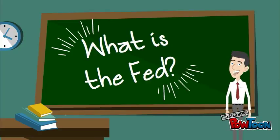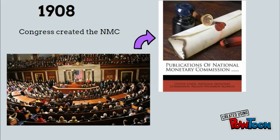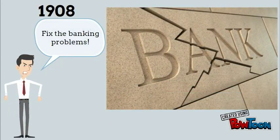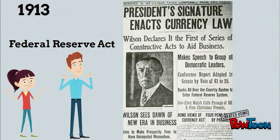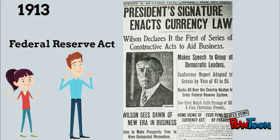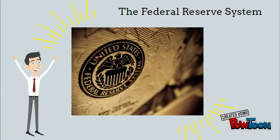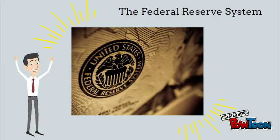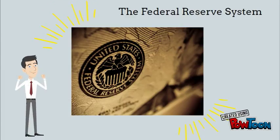So what is the Fed? In 1908, Congress created the National Monetary Commission to propose solutions to the nation's banking problems. In 1913, Congress passed the Federal Reserve Act on the recommendation of the NMC. The act resulted in the Federal Reserve System, often known as the Fed.